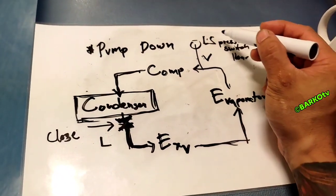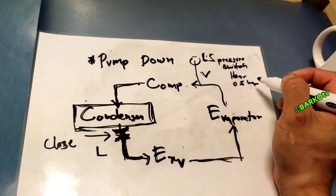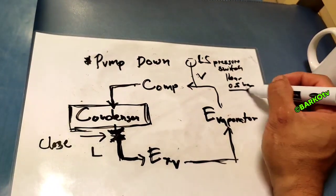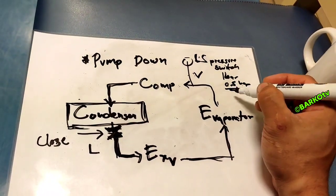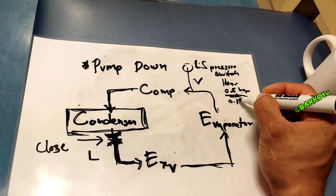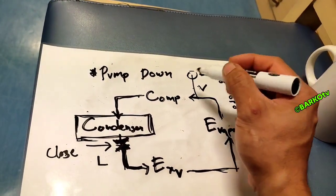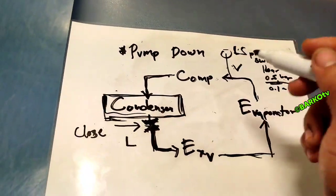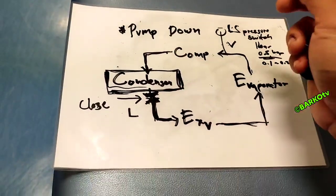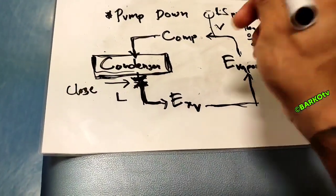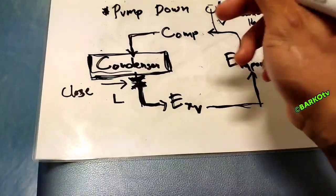For example, if the setting of the low pressure switch is 1 bar, once the system reaches 1 bar the compressor will auto shut off. If the setting is 0.5 bar, the compressor shuts off at 0.5. But if you want to do more pumping down, just override the low pressure switch down to 0.1 bar to collect almost the total amount of refrigerant going to the condenser.